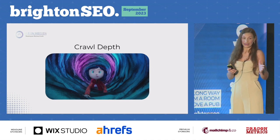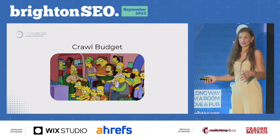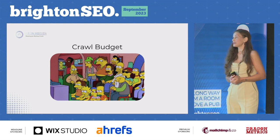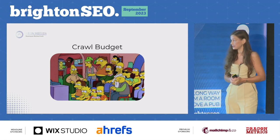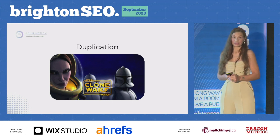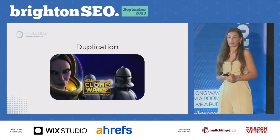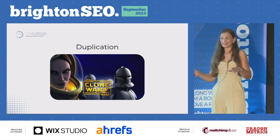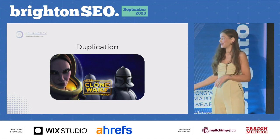Pages being rarely crawled can be because of crawl depth, which can play an important part in what Google is actually crawling. Or, if it's a large site, it could be because of crawl budget. A good sign that you're struggling with crawl budget is a really high proportion of 'discovered, not indexed' content on Google Search Console. Duplication is another issue — it's not always canonicalized duplication; there can be duplication on site that's never been picked up, and the marketing team may not even be aware that another lesser page is ranking.